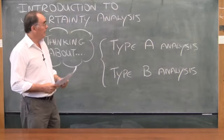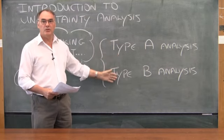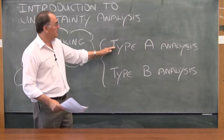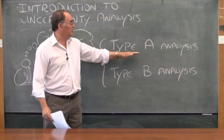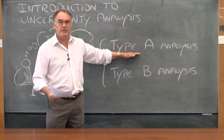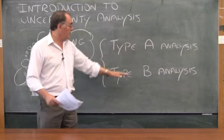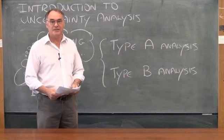Now you will find as we go that there are two types of analysis that we can do to determine the uncertainty, that's to quantify the uncertainty. A type A analysis is one in which a set of data is being collected in which you can do an analysis of the spread of the data. A type B analysis is any kind of analysis that's not a type A analysis.